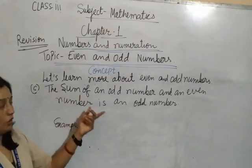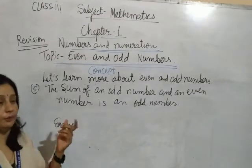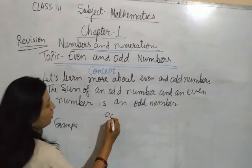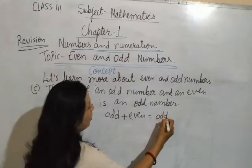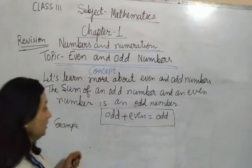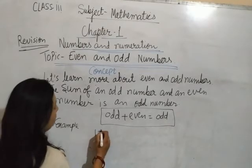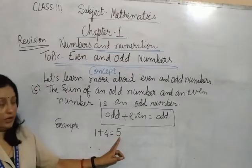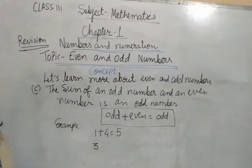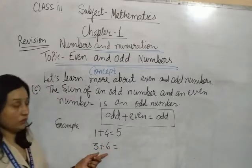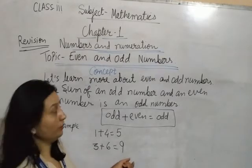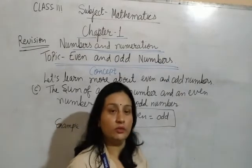Third point: the sum of an odd number and an even number is an odd number. So, odd number plus even number always equals an odd number. Example: 1 (odd) plus 4 (even) equals 5, which is an odd number. More example: 3 (odd) plus 6 (even) equals 9, which is an odd number. So, odd number plus even number always equals odd number.